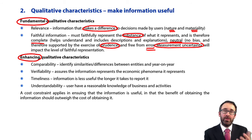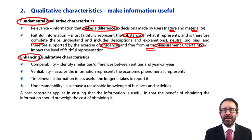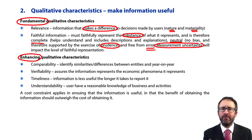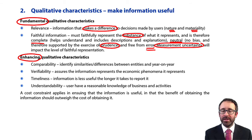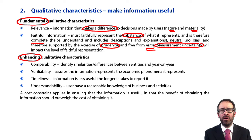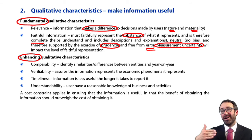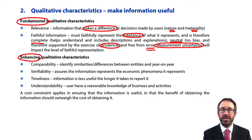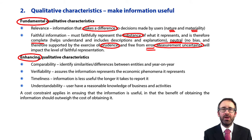We need to make sure information is free from material error — getting the numbers materially accurate and ensuring the measurement is correct. Regarding measurement uncertainty: if there's uncertainty about the value to include, we need to ensure we're including it in a way that gives useful information to users. If not, it will lead users to make incorrect decisions. This links back to providing more defined areas of measurement to reduce that level of measurement uncertainty.